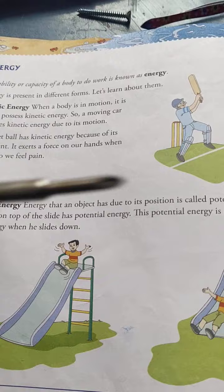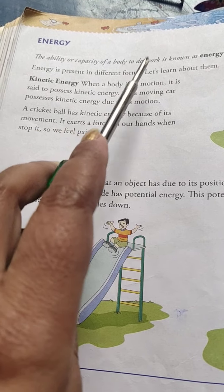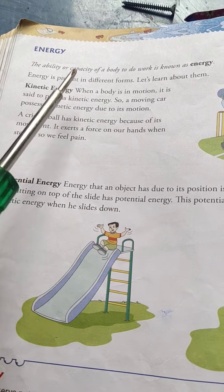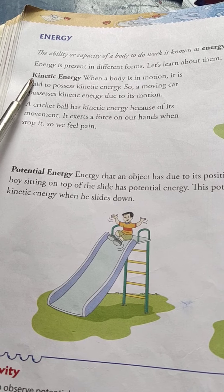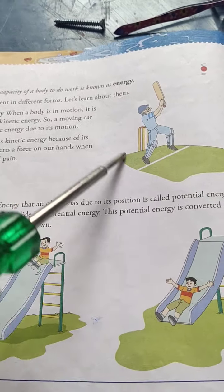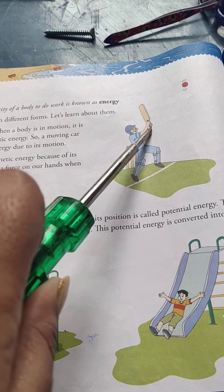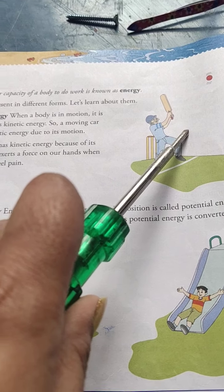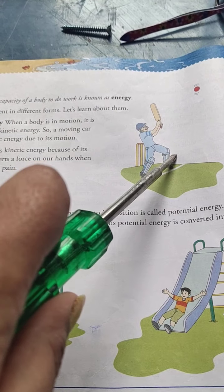Now let's come to the last topic of the chapter — energy. The ability or capacity of a body to do work is called energy. Energy is also present in different forms around us. The first is kinetic energy — it is the energy possessed by a moving body. This ball and the bat of the batsman both possess kinetic energy since they are in moving positions. This energy is due to motion — any moving object will have kinetic energy in it.